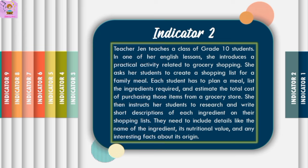Numeracy skills consist of comprehending and applying fundamental arithmetic operations like addition, subtraction, multiplication, and division. They also include the ability to reason with mathematical concepts, interpret data, charts, and diagrams, solve problems, and make decisions based on logic. To illustrate enhancing both skills, Teacher Jen asks grade 10 students to create a shopping list for a family meal, planning the meal, listing ingredients, and estimating the total cost — working on math skills through budgeting — while also researching and writing short descriptions of each ingredient, enhancing literacy skills.